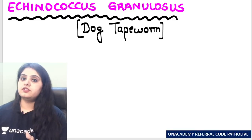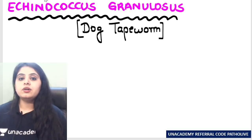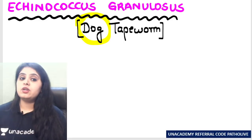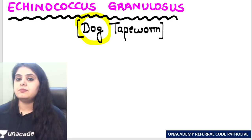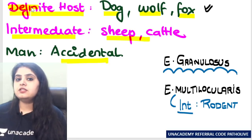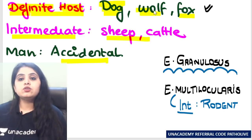The twist in the story is that till now I always used to say the human is the definitive host. Now, the dog is going to become the definitive host — that is why I'm calling Echinococcus granulosis the dog tapeworm. So first and foremost, the definitive host is obviously the dog, but it could also be wolf and fox.